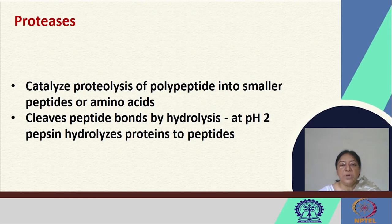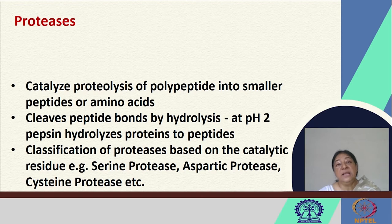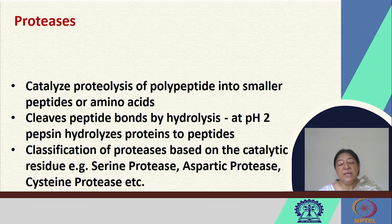The examples of covalent catalysis are mostly shown in proteases. Proteases catalyze proteolysis — the cleavage of polypeptides into smaller peptides or amino acids — indicating the cleavage of the peptide bond. For example, at pH 2, pepsin is able to hydrolyze proteins to peptides. The classification of these proteases comes from the specific catalytic residue involved in the covalent catalysis.